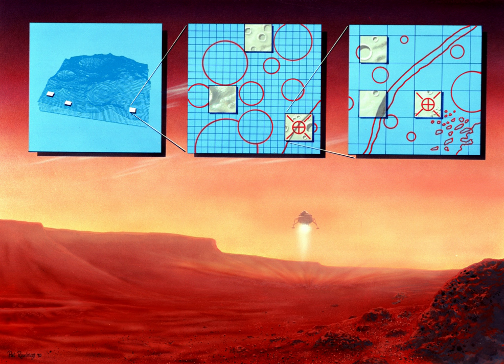The Schiaparelli lander was intended to test technology for future soft landings on the surface of Mars as part of the ExoMars project. It was built in Italy by the European Space Agency and Roscosmos. It was launched together with the ExoMars Trace Gas Orbiter on 14 March 2016 and attempted a landing on 19 October 2016. Telemetry was lost about one minute before the scheduled landing time, but confirmed that most elements of the landing plan, including heat shield operation, parachute deployment, and rocket activation, had been successful. The Mars Reconnaissance Orbiter later captured imagery showing what appears to be Schiaparelli's crash site.